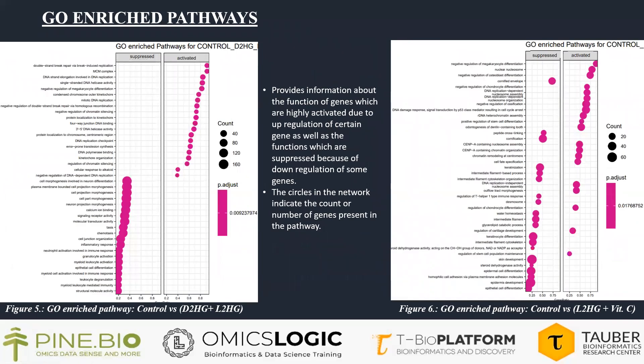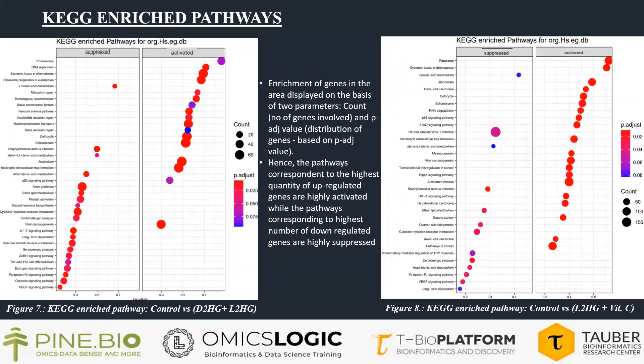The ORA-enriched pathway plot provides information about the function of genes highly activated due to up-regulation, as well as functions suppressed due to down-regulation. The circles in the network indicate the count or number of genes present in the pathway. It provides information about various pathways either activated or suppressed due to up- or down-regulation of genes. Enrichment of genes is displayed based on two parameters: count of genes involved and adjusted p-value.